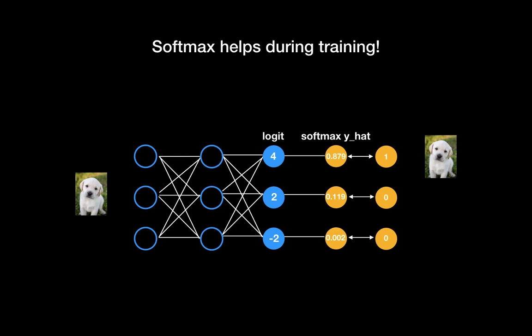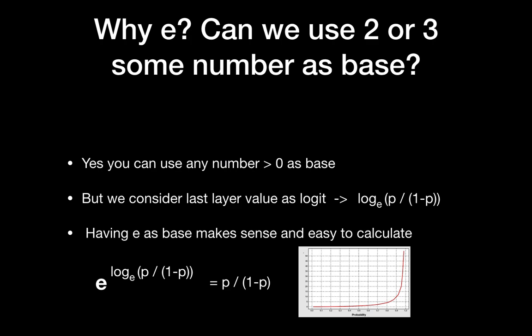When you compare the one-hot encoded target with the softmax prediction, softmax exaggerates the probabilities — the highest probability will be very close to one and the low probabilities will be close to zero. This helps optimize the deep learning model during training. A common question is: why use e as the base? Can we use 2 or 3? Yes, you can use any number greater than zero as the base.